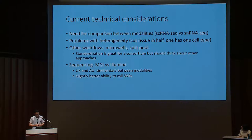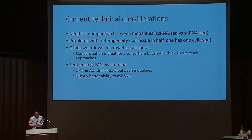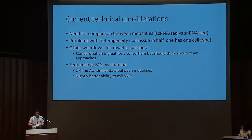We discussed current technological considerations. In some cases we have to do single nucleus RNA-seq just because single cell RNA sequencing won't work — for example, sequencing adipocytes. There is a lack of extensive comparisons between these two modalities on tissues where both assays might work. There was discussion about how well correlated these assays are, and it's not known to the community exactly how well they correlate and what's missing in one.